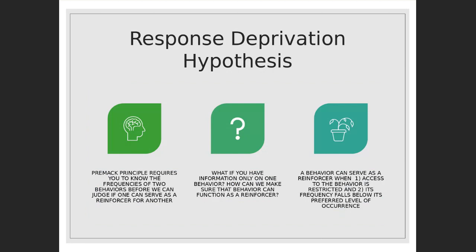The Premack Principle requires you to know the frequencies of two behaviors before you can judge if one can serve as a reinforcer for another. The response deprivation hypothesis, however, allows you to turn a behavior into a reinforcer if you know the frequency of just one behavior — you can make that behavior into a reinforcer.